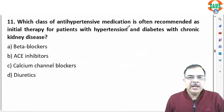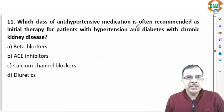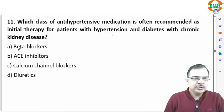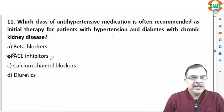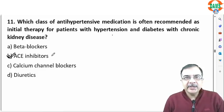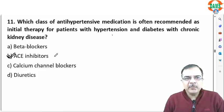Question 11: which antihypertensive medication is recommended as initial therapy for hypertension with diabetes and CKD? The drug of choice is ACE inhibitor, which decreases remodeling in the kidney and is helpful for diabetic nephropathy. Beta blockers should generally be avoided in diabetic patients.